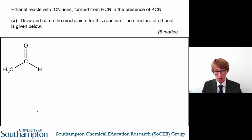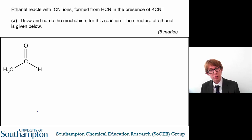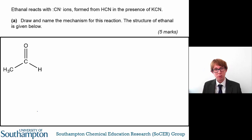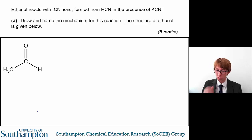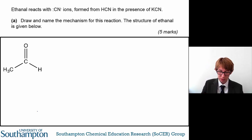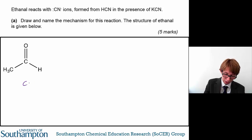Question four relates to the reaction of ethanol with cyanide ions, which are formed from hydrogen cyanide in the presence of potassium cyanide. For this reaction you need to draw and name the mechanism, and the structure of ethanol is given. The first stage of this reaction involves ethanol reacting with cyanide ions, so it's a good idea to draw these cyanide ions in.